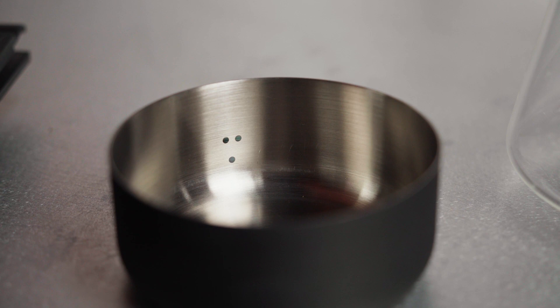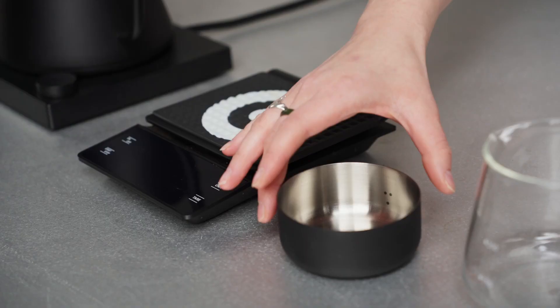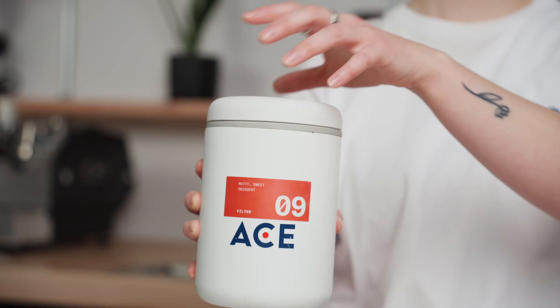Before we start brewing there are some things we need to prepare. Have a kettle ready with at least 500 milliliters of water, a scale and a grinder.